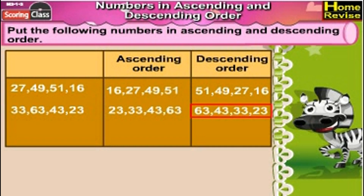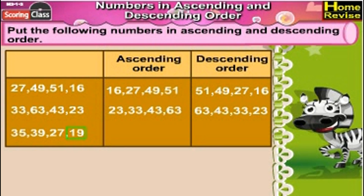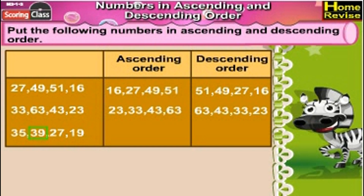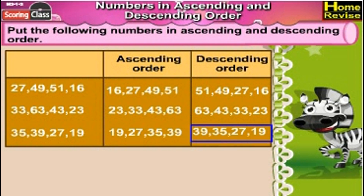Now the last one: 35, 39, 27, 19. The smallest number is 19. Then the next number would be 27. Then 35 and 39. So the ascending order is 19, 27, 35, 39. The descending order would be 39, 35, 27, 19.